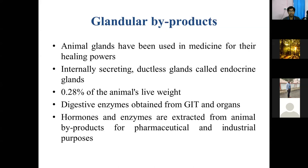These glands have been utilized since time immemorial for the production of various hormones and enzymes, with a strong history of use for healing wounds and treatment of several diseases. Apart from glands, several enzymes are also obtained from the gastrointestinal tract and different organs. In this chapter, we will read about different hormones, enzymes, and peptides extracted from animal byproducts for pharmaceutical and industrial purposes.